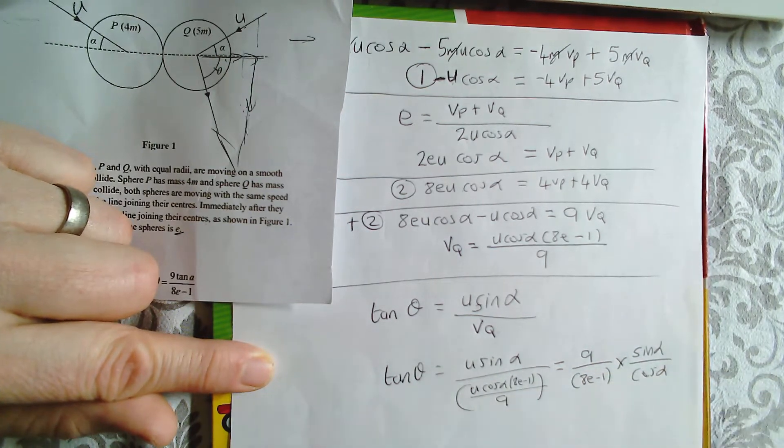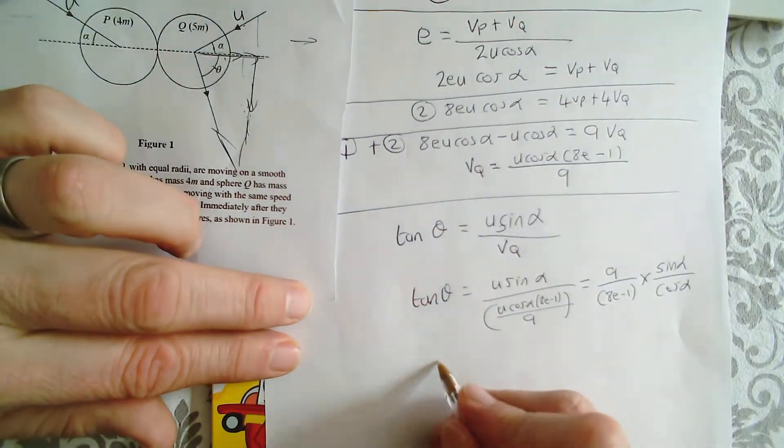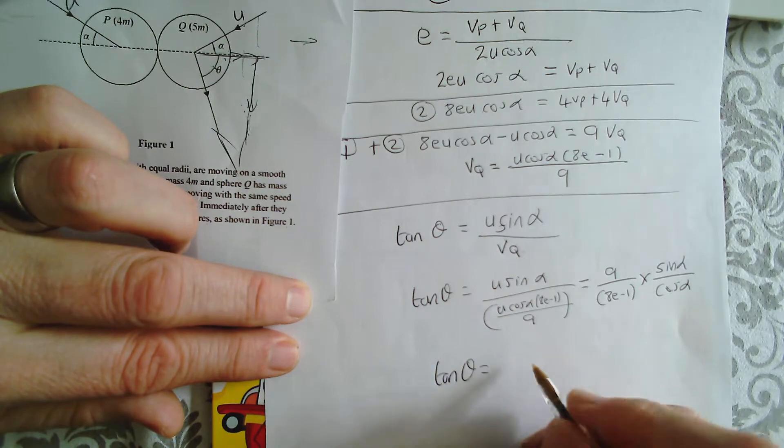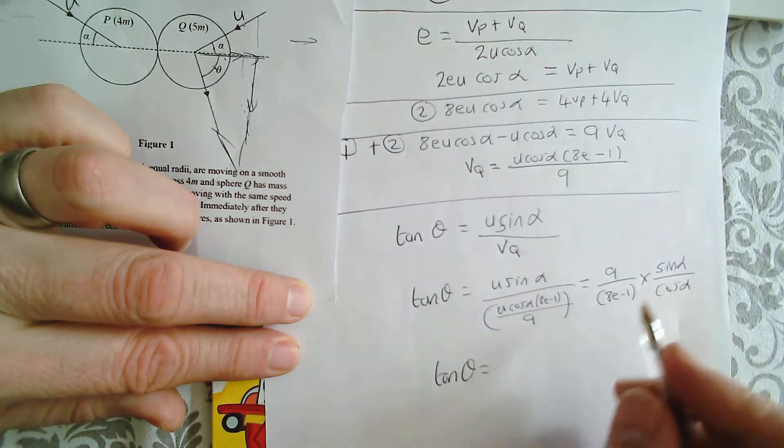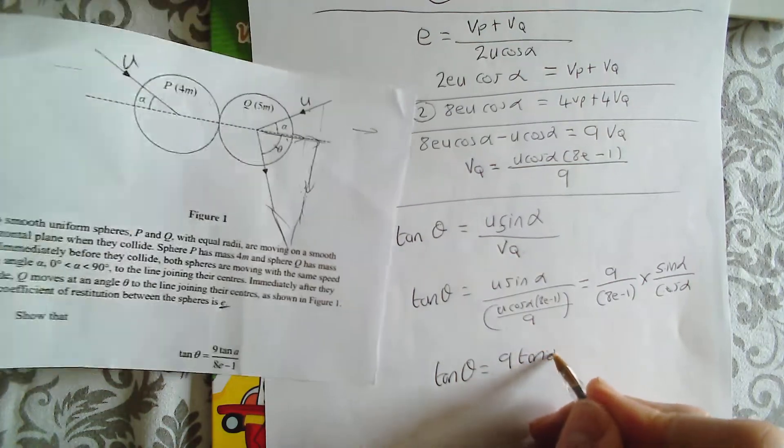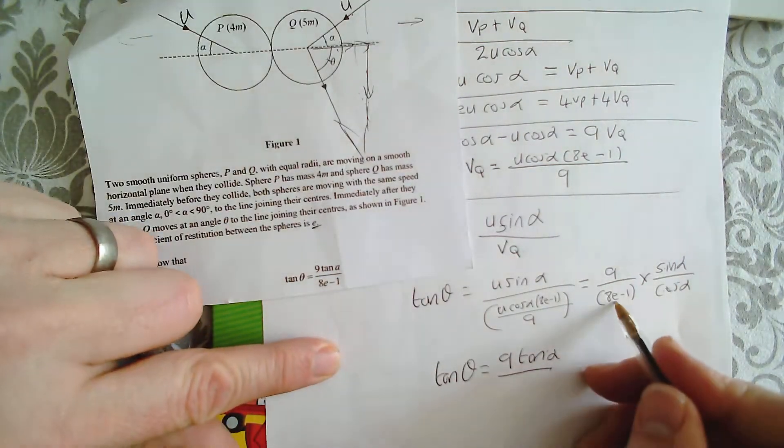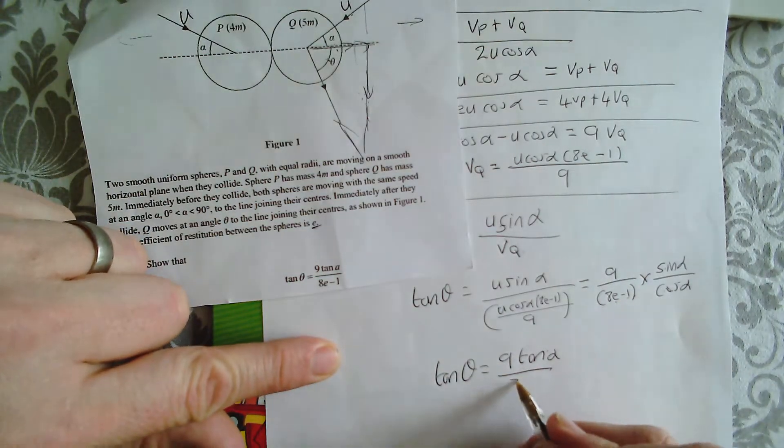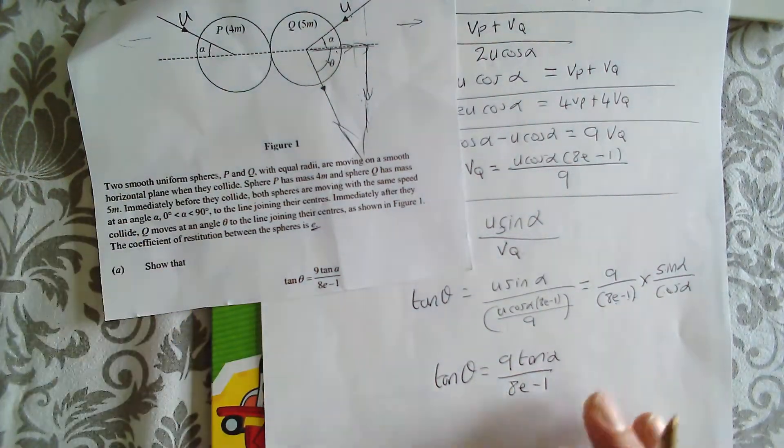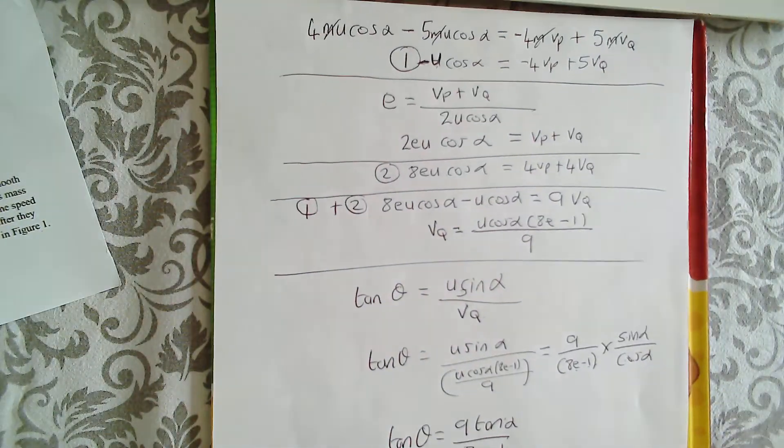Well, sine alpha over cos alpha, what is that? That's right, tan. So, tan theta equals 9 tan alpha. So far, so good. That's what I'm after. Over, look what I'm left there with, 8E minus 1. Now, see if you can see it there.